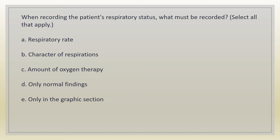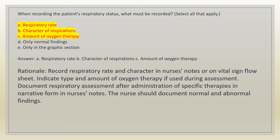When recording the patient's respiratory status, what must be recorded? Select all that apply. A. Respiratory rate. B. Character of respiration. C. Amount of oxygen therapy. D. Only normal findings. E. Only in the graphic section. Answer: A, B, and C. Rationale: record respiratory rate and character in nurses' notes or on the vital sign flow sheet. Indicate type and amount of oxygen therapy if used during assessment. Document respiratory assessment after administration of specific therapies in narrative form in nurses' notes. The nurse should document both normal and abnormal findings.